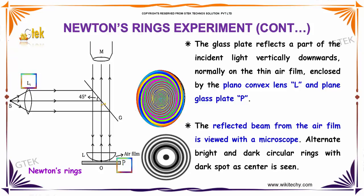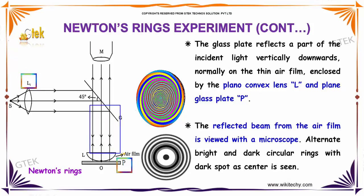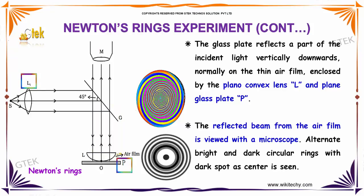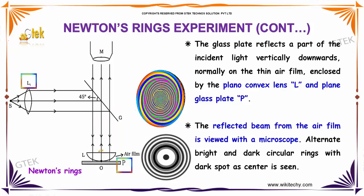The glass plate reflects a part of the incident light vertically downwards, normally on the thin film enclosed by the plano-convex lens L and plain glass plate P.